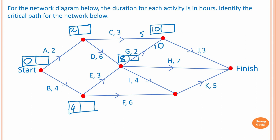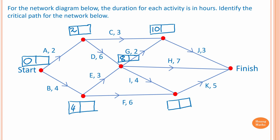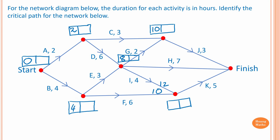The earliest starting time for K requires completing activities I and F: eight plus four is twelve, and four plus six is ten. The largest value is twelve, so the earliest starting time for K is twelve hours.